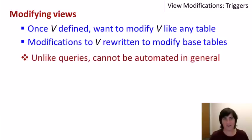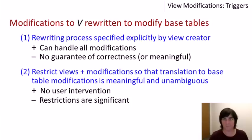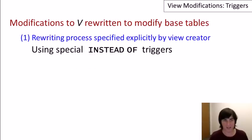Unlike with queries over views, we can't in general automate the process of rewriting modifications on views into modifications on the base tables. There are two basic approaches: one is to have intervention by the view creator, where the rewriting process is specified as part of creating a view if we want to allow modifications against it. The other is to restrict the allowed views and modifications so that the translation can be automated. In this video, we're talking about the first case — specifically, how instead-of triggers can be used to specify the rewriting process.